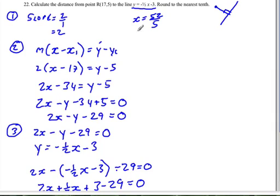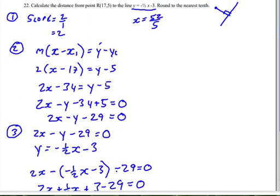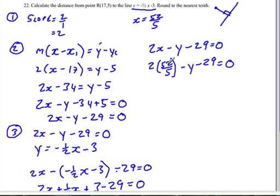All right, so now we have to find the y-coordinate, and if we sub into the equation 2x minus y minus 29. For x equals 52 over 5, so this is 2 times 52 over 5 minus y minus 29 is equal to 0. Well, we can simplify, so it becomes 2 times 52 is 104 over 5 minus y minus 29 equals 0.